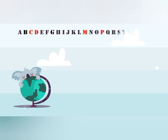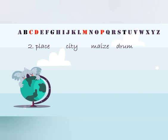In the second number, we have: place, city, maze and drum. In alphabetical order, first we have C, so we will write 'city'. Then we have D, so we will write 'drum'. After that we have M, so we will write 'maze'. And last will come P, so we will write 'place'.